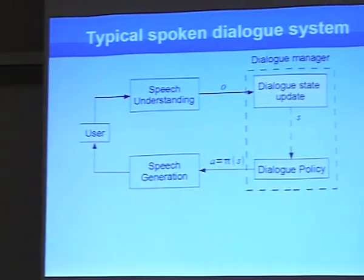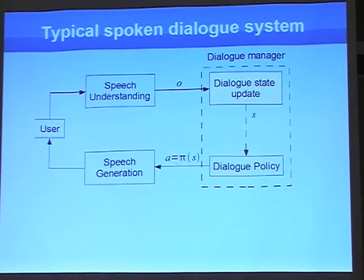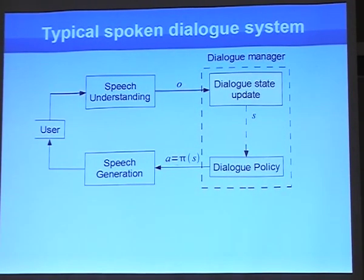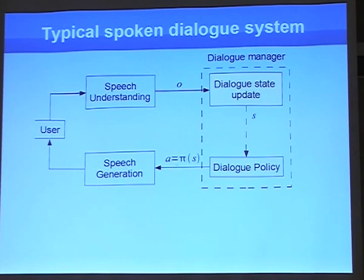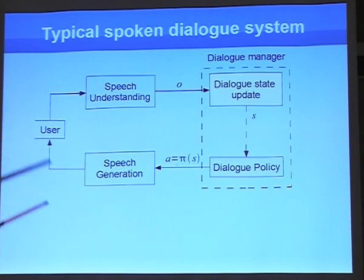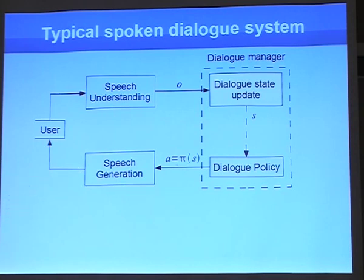Here are the main components of a typical spoken dialogue system. It is composed of many blocks. The most important part is the user, and it starts with a user talking. I will be most interested in speech-enabled dialogue systems — a user talking to a dialogue system using speech. There is a component of speech understanding, the dialogue manager itself, and speech generation, which generates an acoustic signal that the user listens to and responds to.